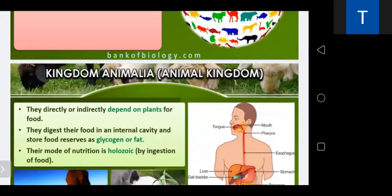Animals digest food in the alimentary canal and it is reserved as glycogen or fat. The mode of nutrition is holozoic, by ingestion of food. A definite growth pattern is present; adults have a definite shape and size. Higher forms have well-developed sensory and neuromuscular mechanisms, which are not present in plants. Locomotion is present in most animals.